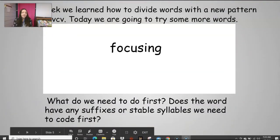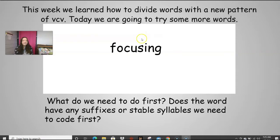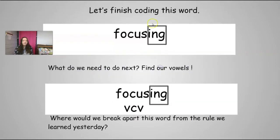All right, so this week we learned how to divide words with the new pattern of vowel-consonant-vowel. Today we're going to be trying some more of those words. Let's look at this word. Remember, what do I need to do first? I always look at the end to see if there's a suffix or a stable syllable to code. There is — suffix I-N-G. So I box off that I-N-G first. Now I just have my root word.